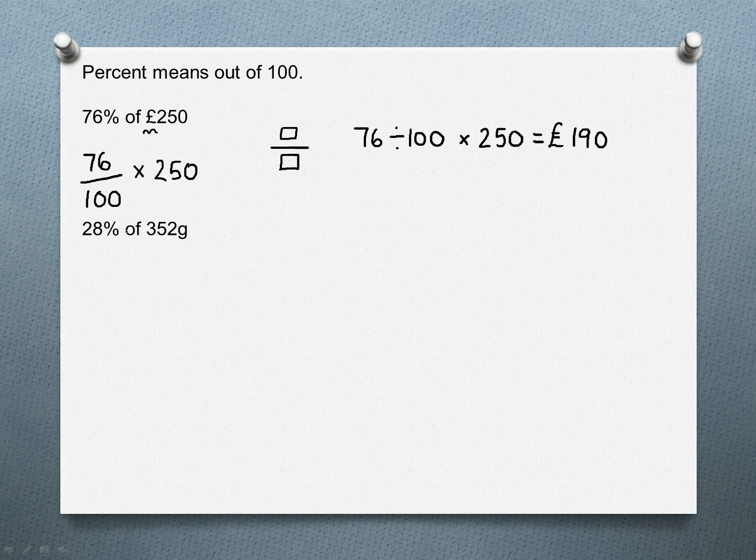There's another one: 28% of 352 grams. So same process. 28% means 28 out of 100, of means multiply. So put this in your calculator however you want to, using either your fraction button or a simple division. Put that in your calculator, you get the answer 98.56. And remember the question was talking about grams, so make sure you include a G at the end of your answer for grams.